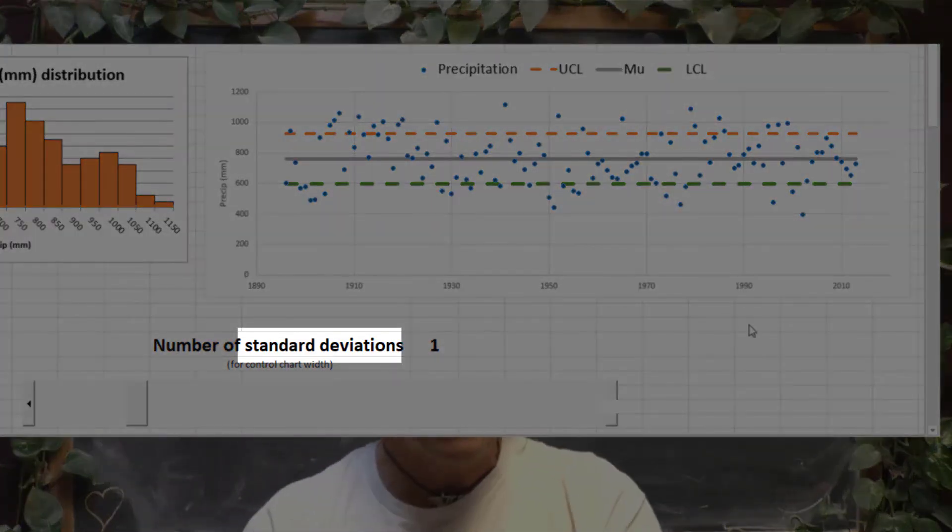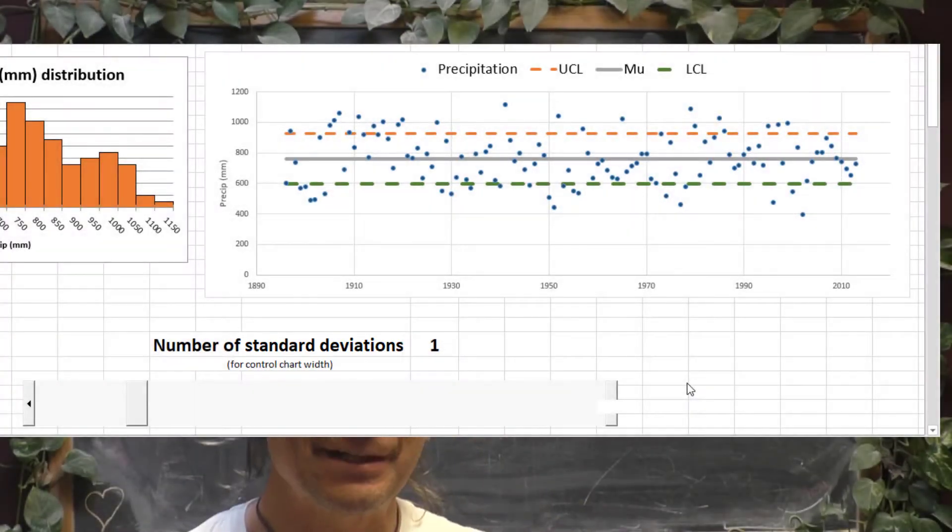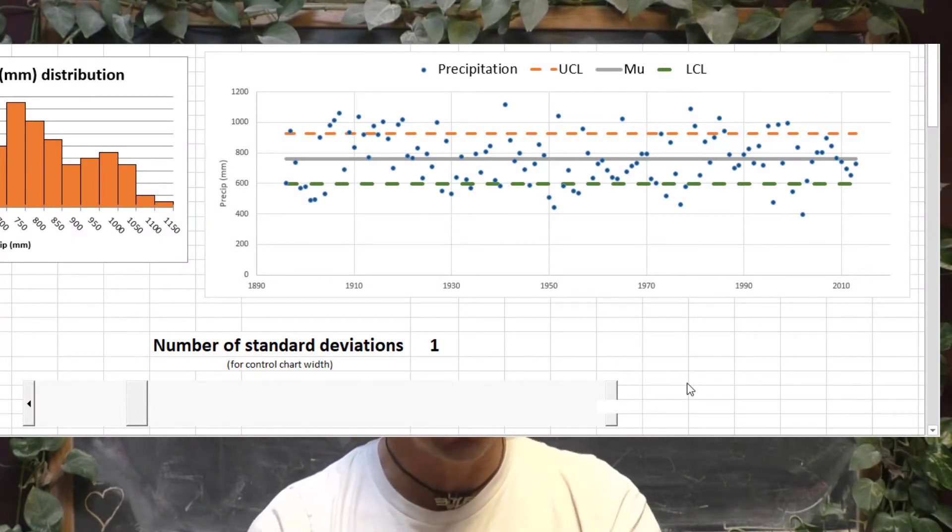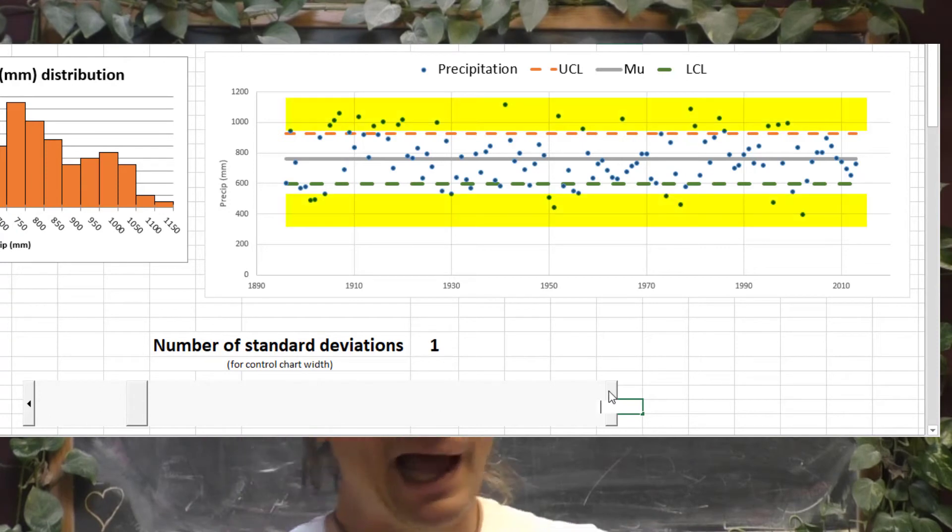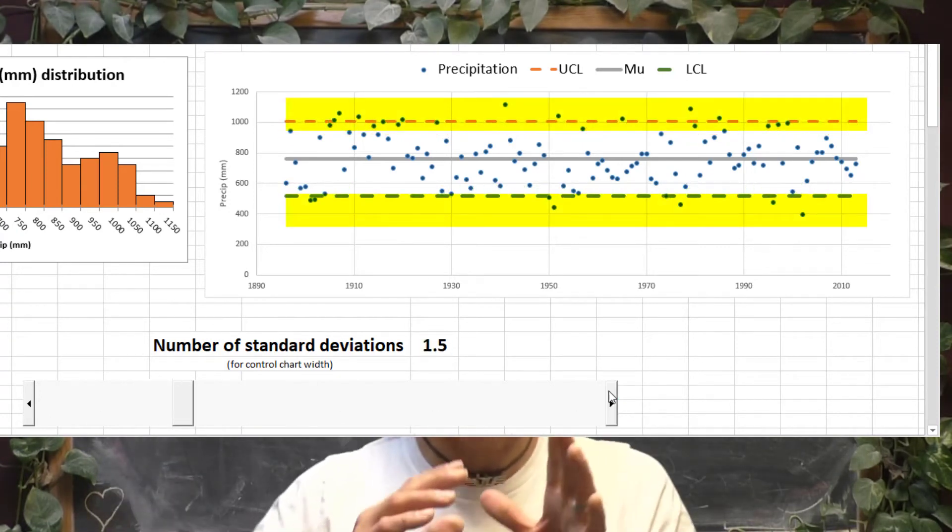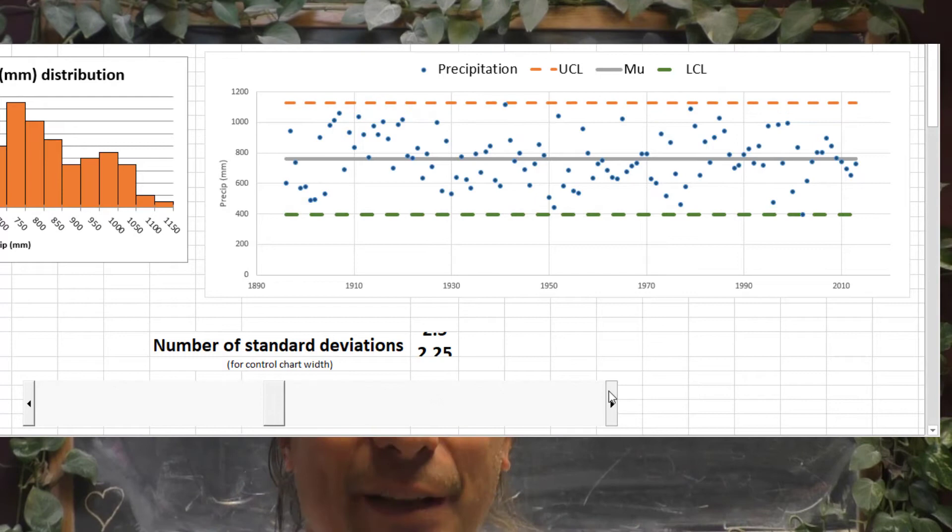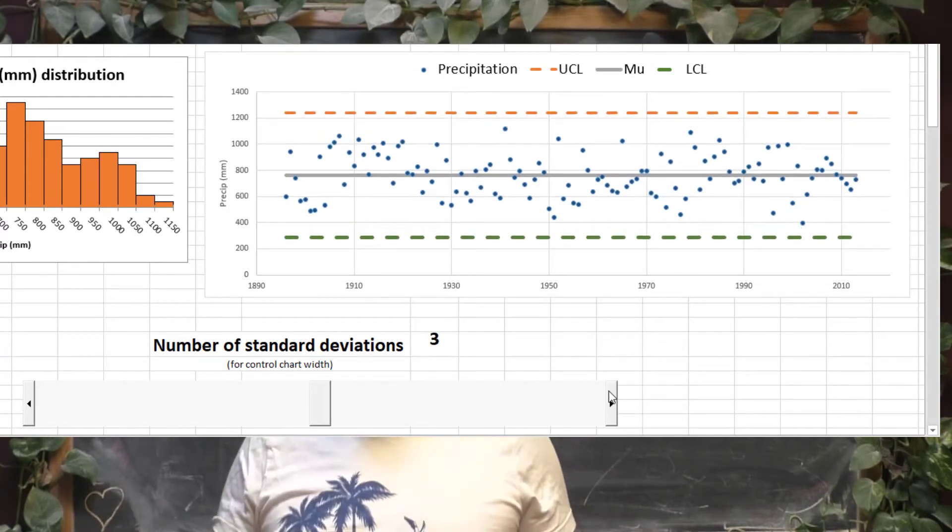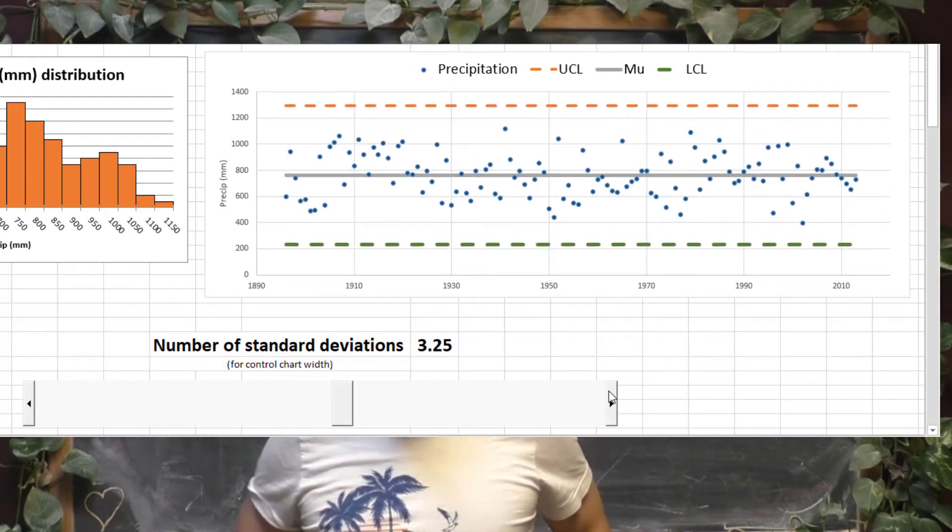But the question that we had was, well, how many standard deviations should we use? Because you can see, if you use too few standard deviations, lots of data points look like outliers. But if you use too many standard deviations, you don't have enough outliers.